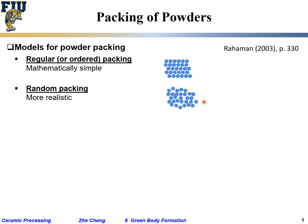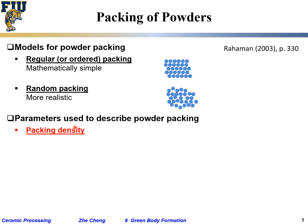Most cases follow so-called random packing naturally. There are certain parameters used to describe powder packing. The most important is so-called packing density, or relative packing density, which is the ratio between the total volume of the actual solid — the total volume of all the powders combined — divided by the total container or overall apparent volume. So packing density is the ratio of solid volume divided by solid volume plus open space, or inter-particle pores between them.